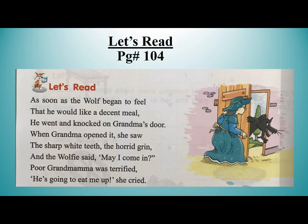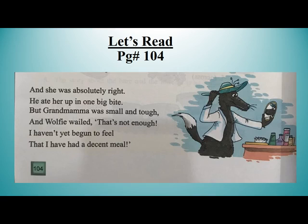Now hold your pencils and underline the dictation words from stanza 1. Underline: decent, horrid, grim. All of you underline these three dictation words. And she was absolutely right — he ate her up in one big bite. But grandmama was small and tough, and wolfie wailed, 'That's not enough. I have not yet begun to feel that I have had a decent meal.'